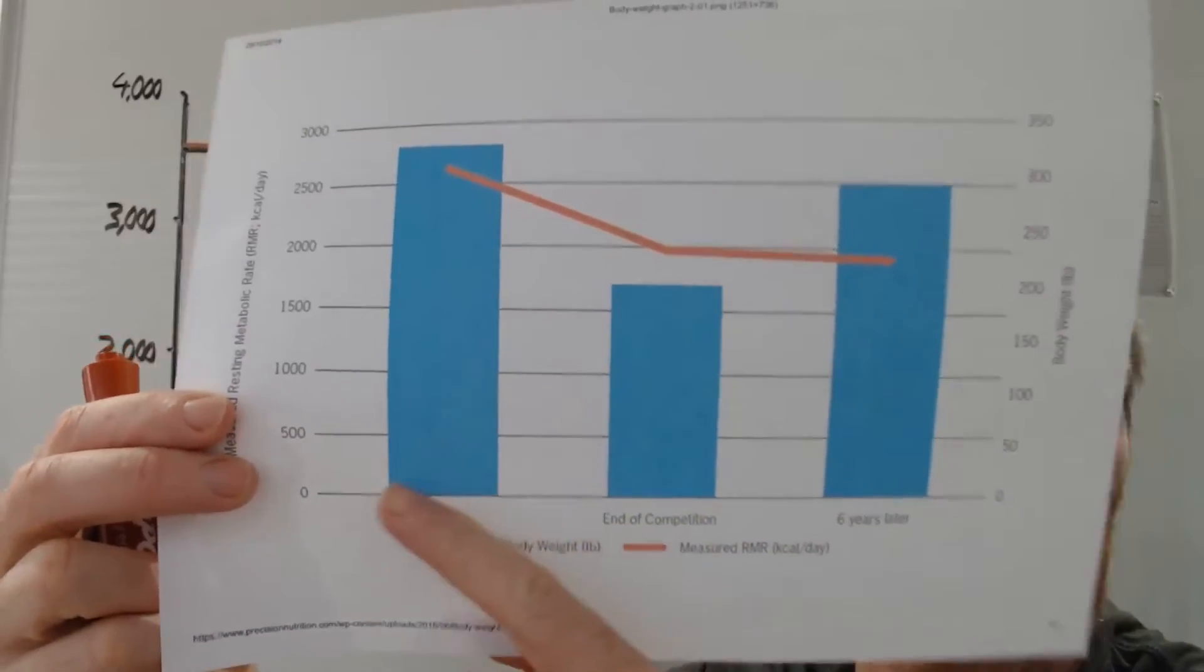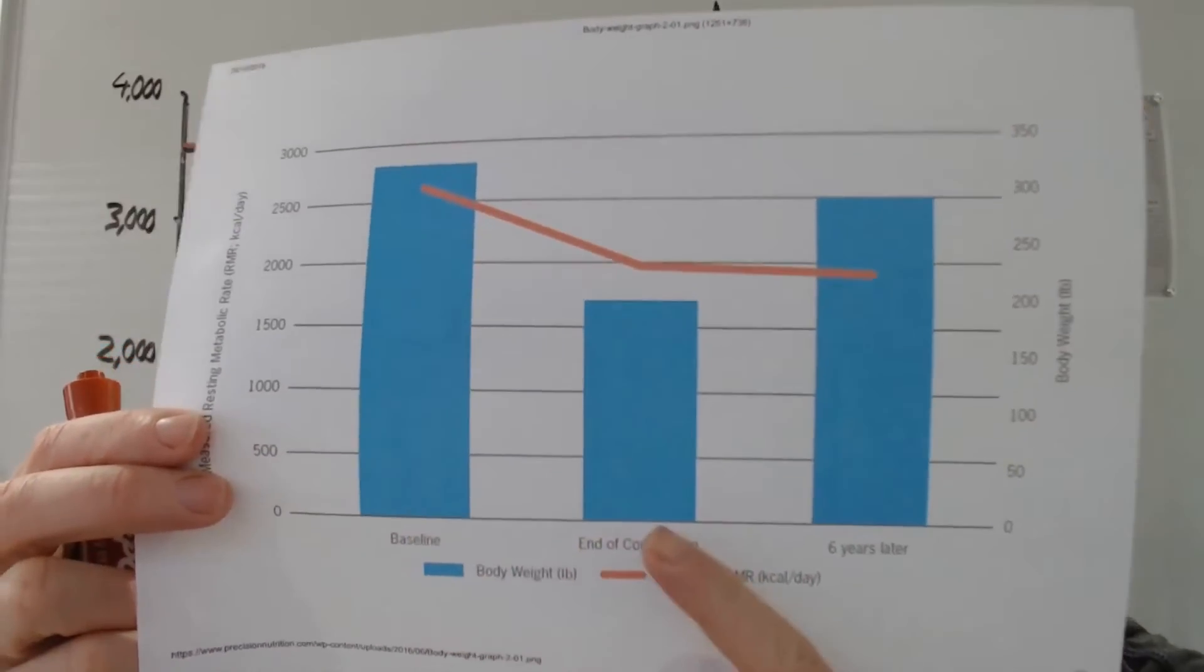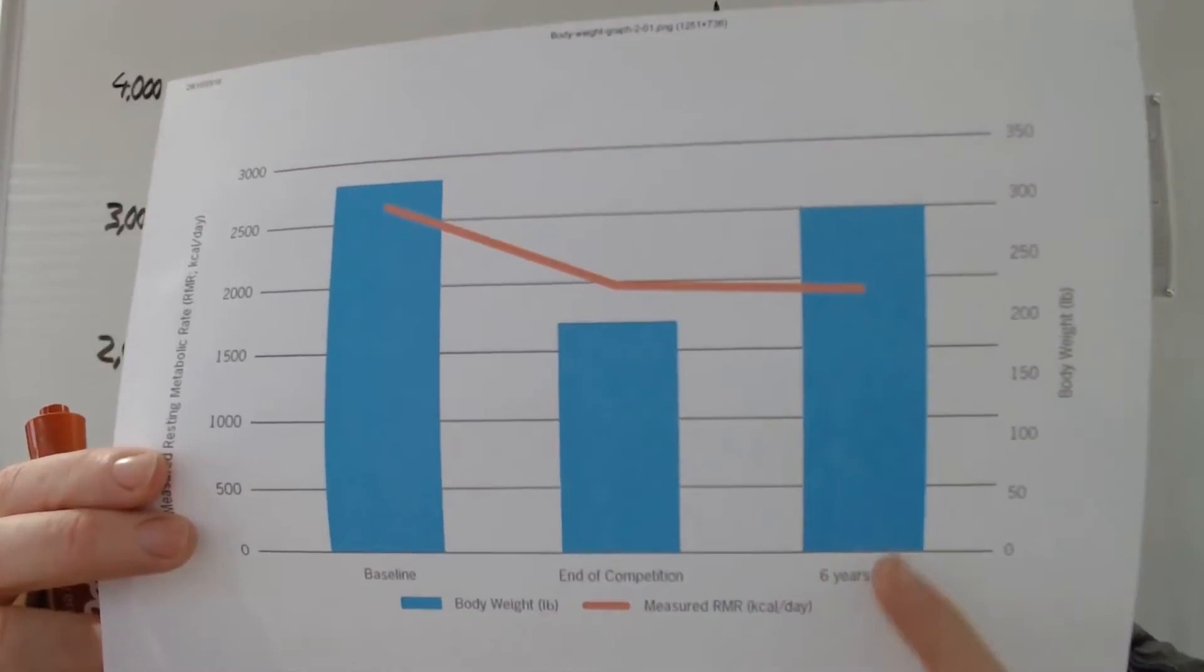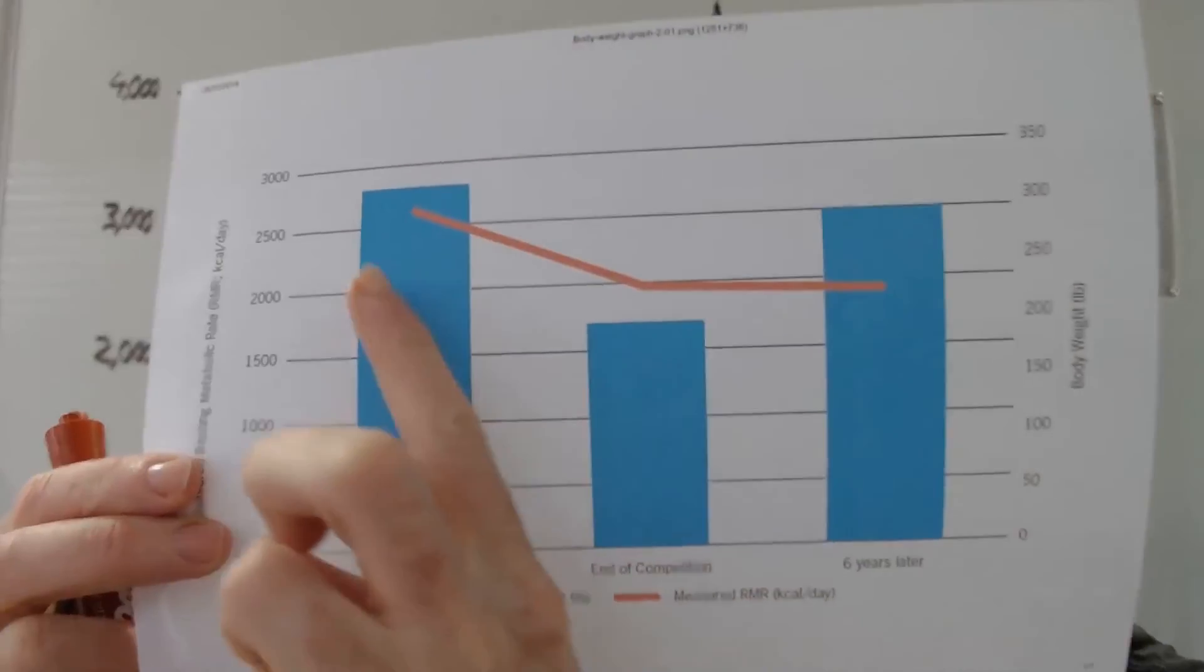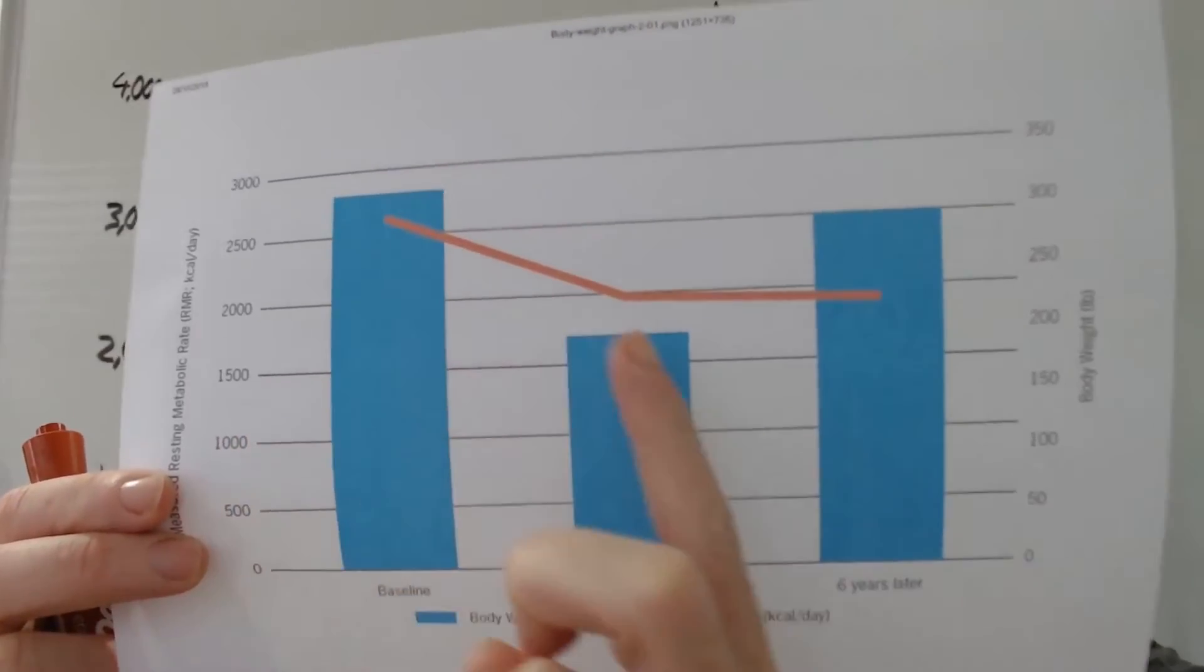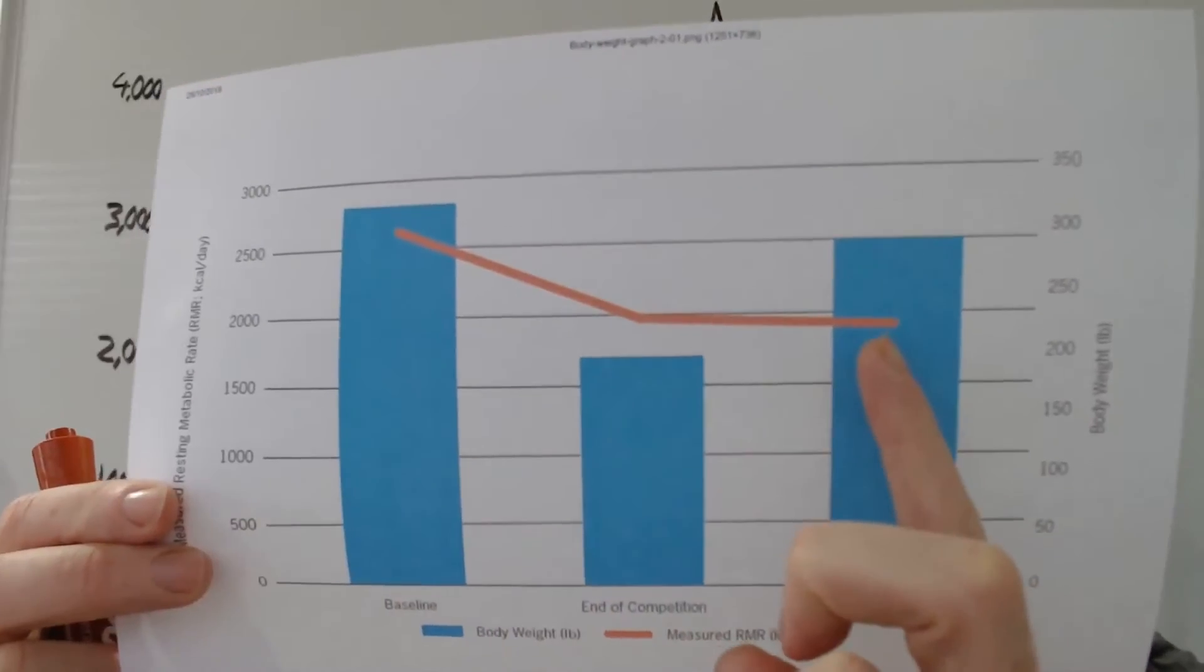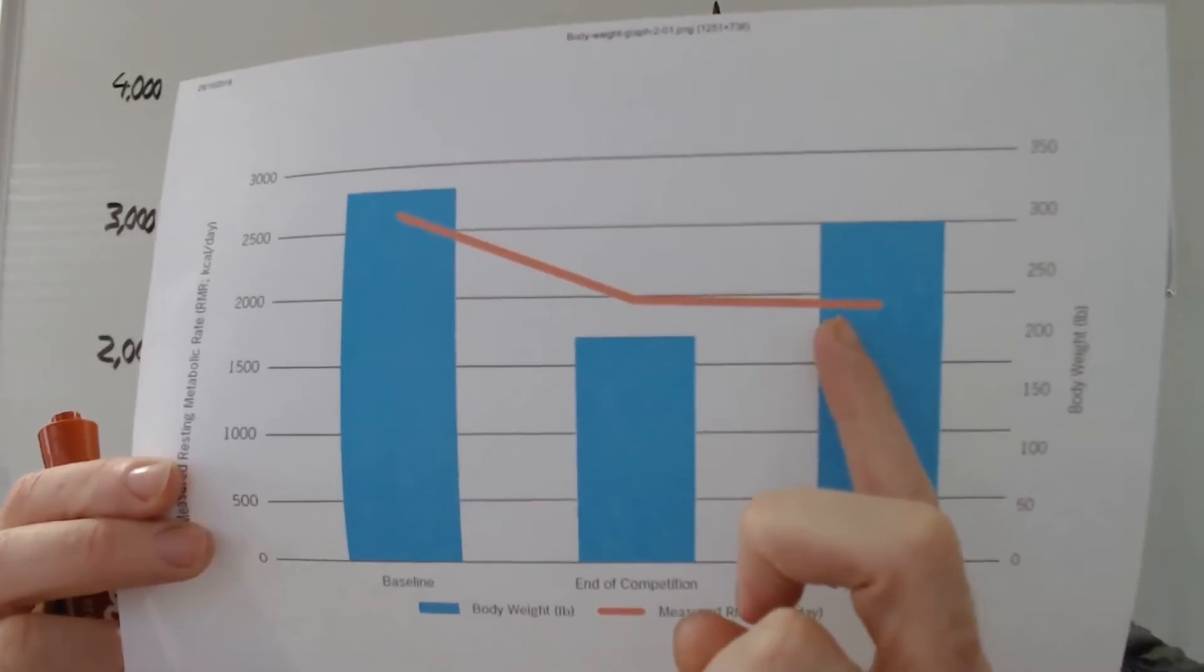And what they did was at the baseline, this is the end of the competition after they've lost 60 kilos. And this is six years later, and the weight has come back on. But interestingly, this is their resting metabolic rate, which crashed down to like 2,000 calories below. And then their resting metabolic rate never recovered.